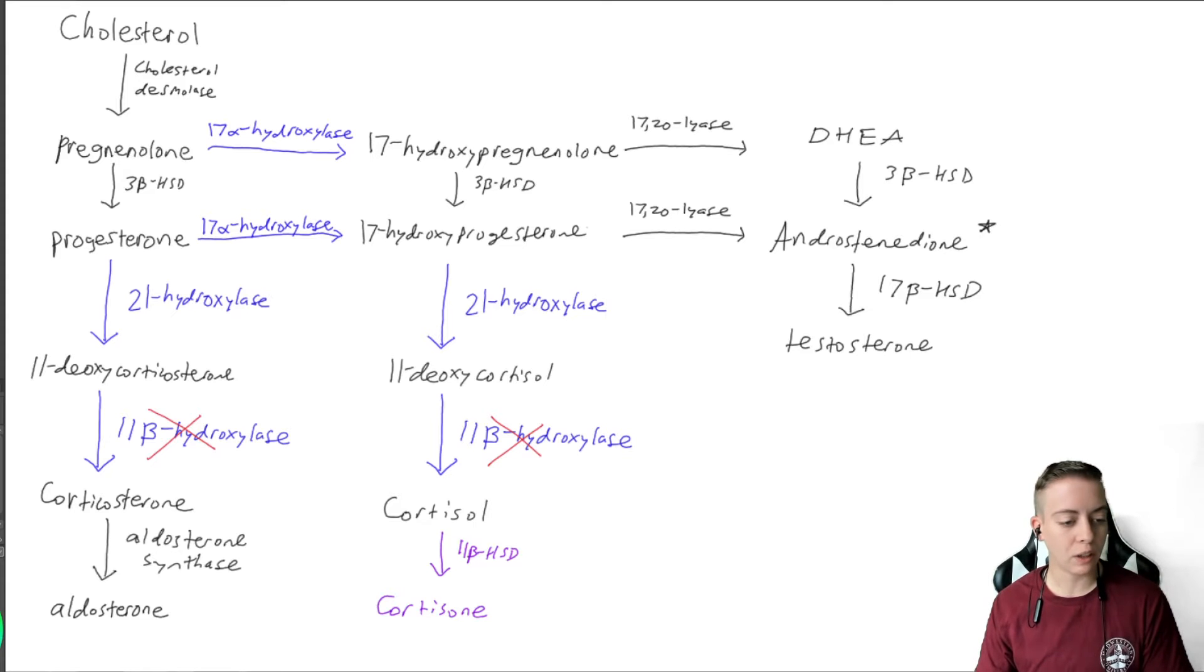Let's get right into this pathway, and I think I'm going to use orange today just so it stands out a little bit more. We are going to once again have an XX fetus, so someone that would typically present with female internal genitalia and female external genitalia. The process is going to be the same as it always has been. We have cholesterol, which enters the cell. It is converted by cholesterol desmolase to pregnenolone, which is converted by 3-beta-HSD to progesterone.